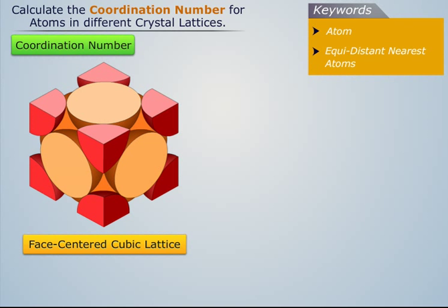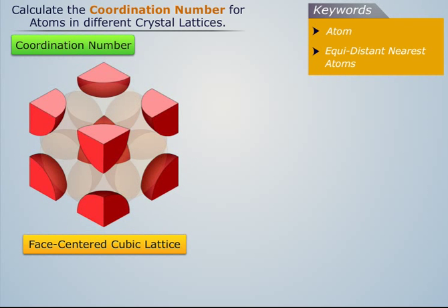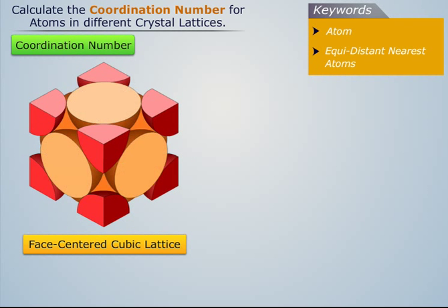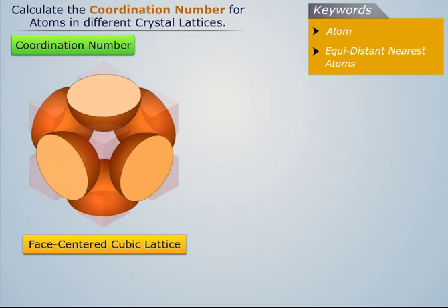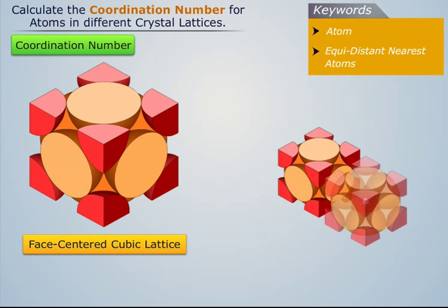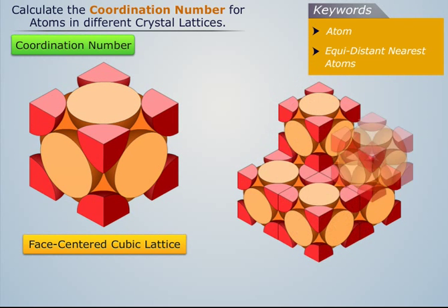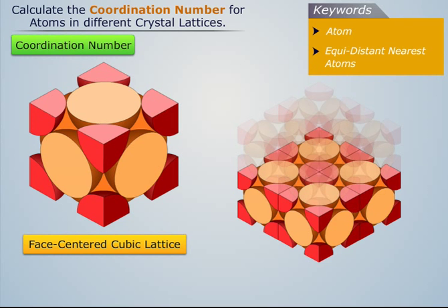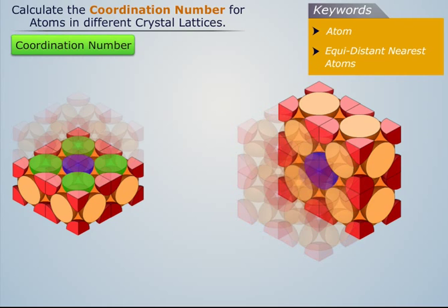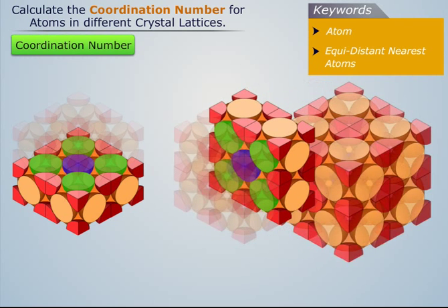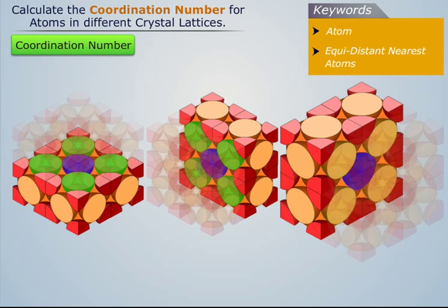We know that a face centered cubic lattice has eight corner atoms and one face central atom at the center of each of its six faces. Every corner atom is at equal distance from face centered atoms placed on three mutually perpendicular planes, in sets of four atoms on each plane.